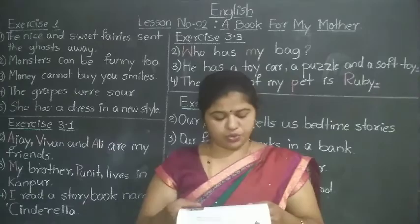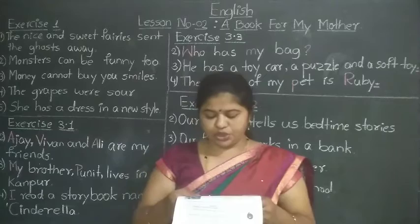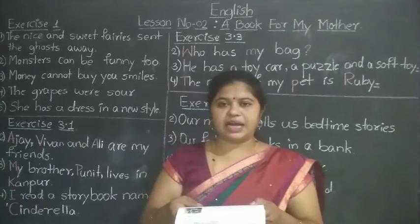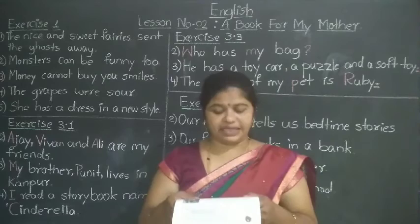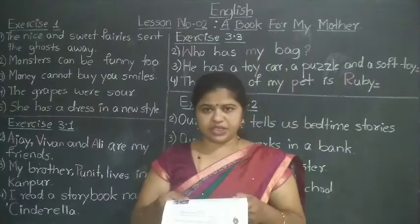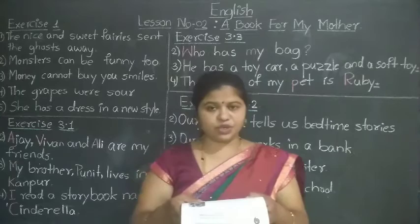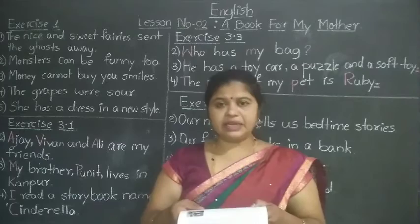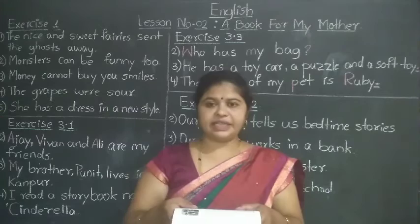Now let us move to exercise 3.3 — rewrite the sentences by correcting the usage of punctuation marks and capital letters. One is done for you: I ate a healthy dinner. In the given sentence, I is written in small letter — should be capital. A is written in capital — should be small. Dinner is also written in capital — should be small. And at the end, a question mark is given — but it is a complete sentence, so put a full stop.